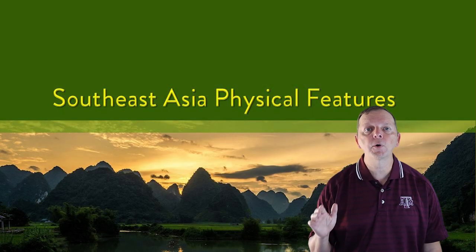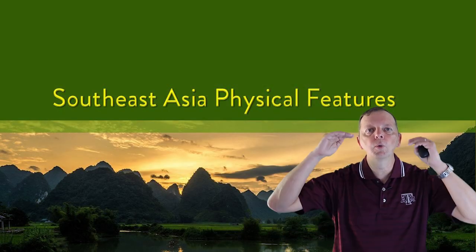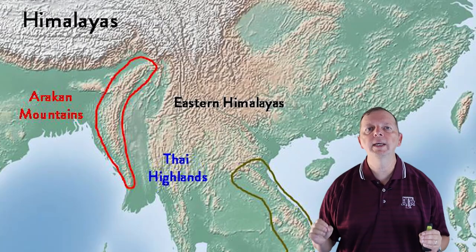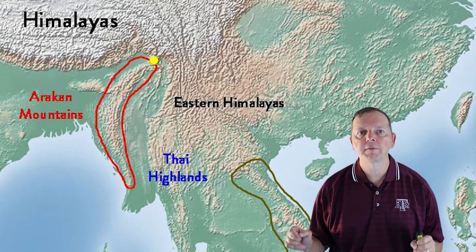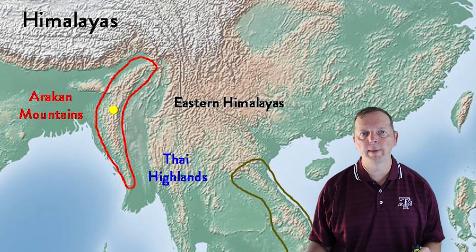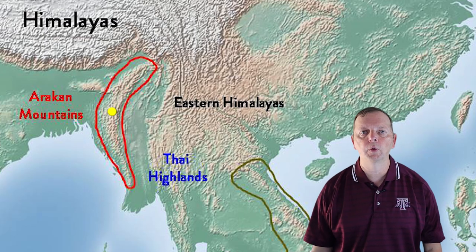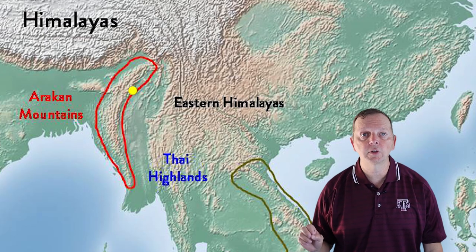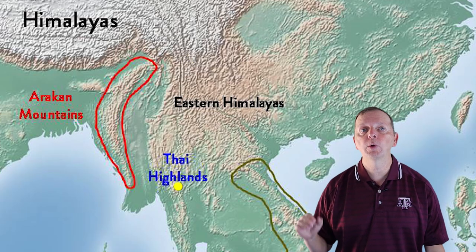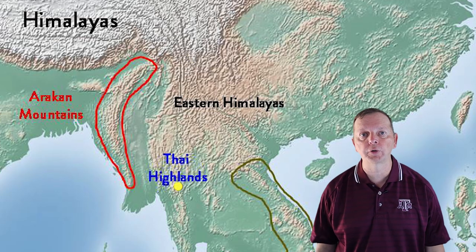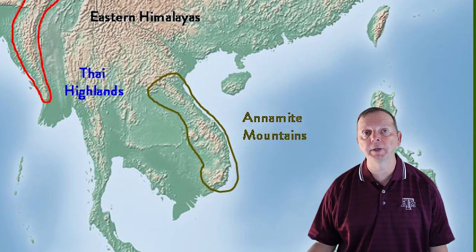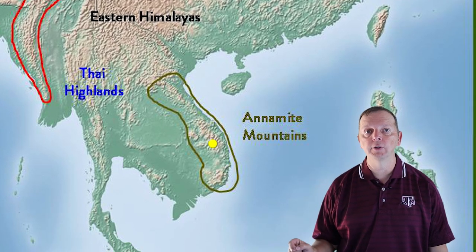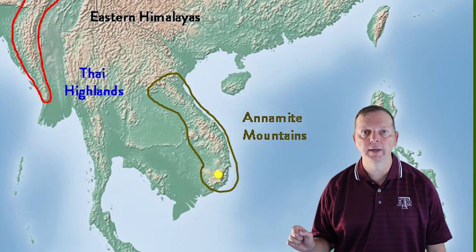Now let's look at Southeast Asia's physical features. First, there are mountains. Into the northern portion of Southeast Asia, we get the eastern Himalayas. From this mightiest of mountain ranges, we get the Arakan Mountains that move north and south through Myanmar. The Himalayas also help form the Thai highlands, found in the northern portion of the country.